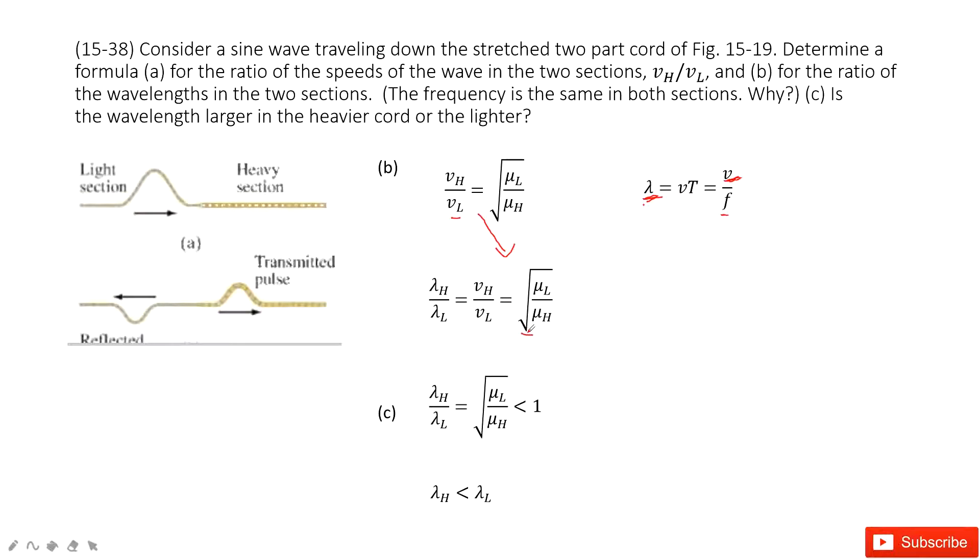The next one asks, is the wavelength larger in the heavier chord or the lighter? We can see we got this ratio there. How can we decide it? We look at this function. This mu is the linear density.